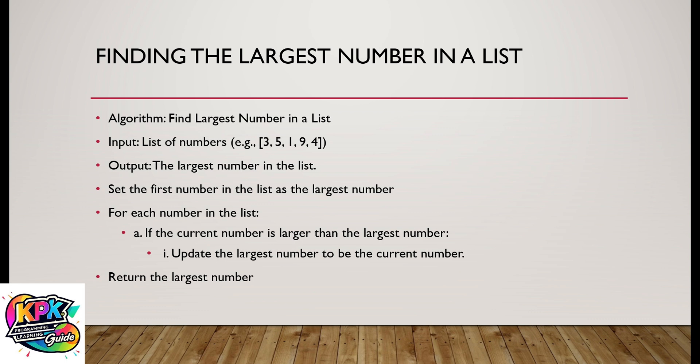Let's look at a few more examples. This pseudocode helps us find the largest number in a list. We have a list of numbers — for example, three, five, one, nine, four — and we want to output the largest number in the list. Before we begin, we set the first number in the list as the largest number. So for this list, we set three as the largest number initially.